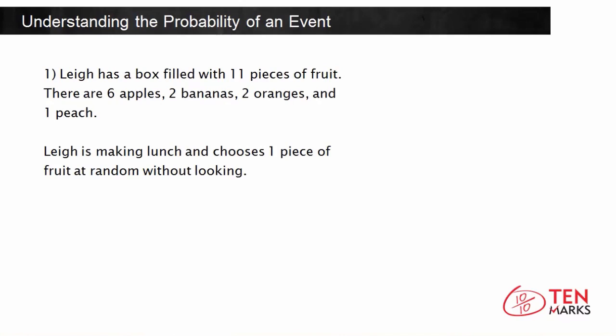Lee is making lunch and chooses one piece of fruit at random without looking. Now, what we're going to do is calculate the different probabilities that she'll pick one type of fruit over another. So we want to know how likely, unlikely, or impossible certain fruit choices would be.